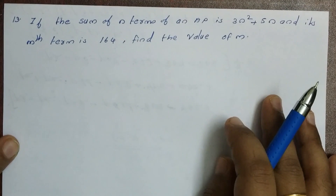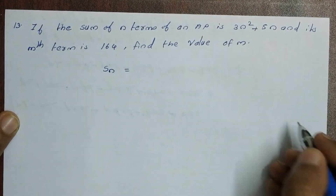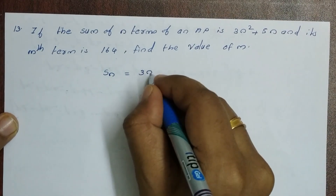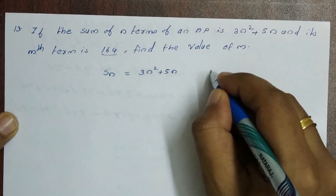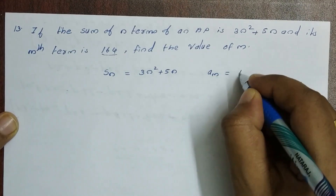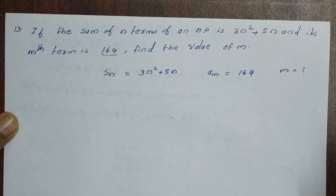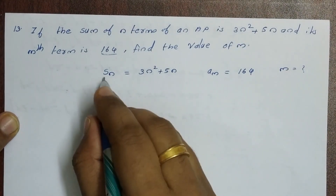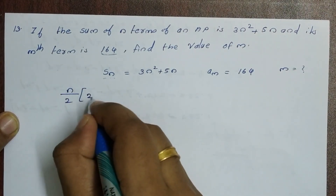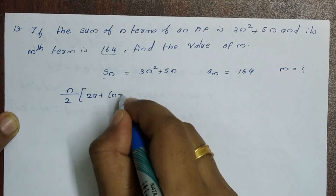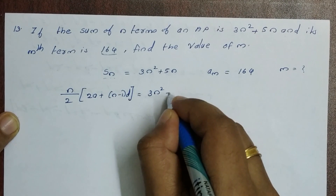Next problem: find the value of m if the mth term of an AP is 164. You can find the sum of n terms of the AP as SN = 3N² + 5N. That is given. And the mth term am = 164. Find the value of m.